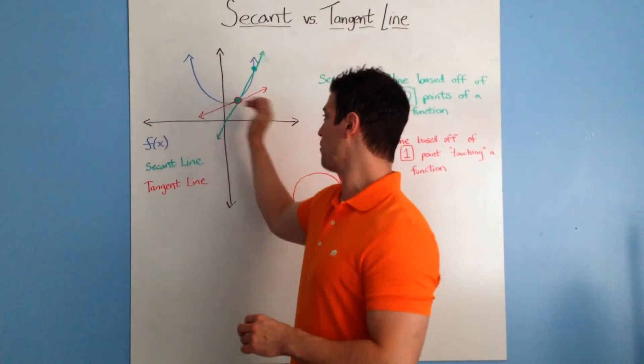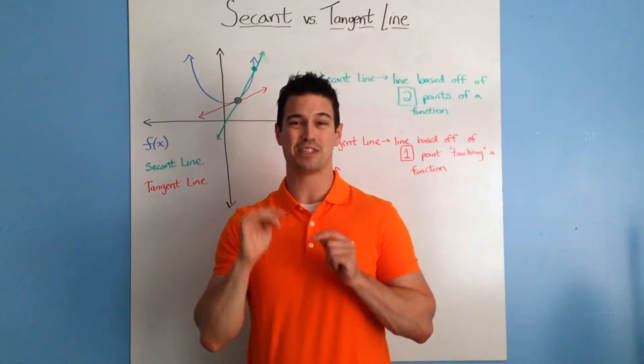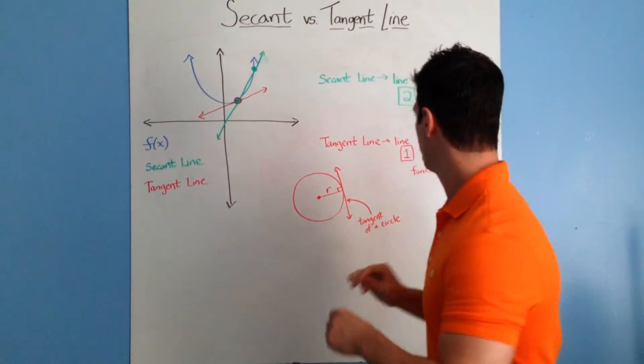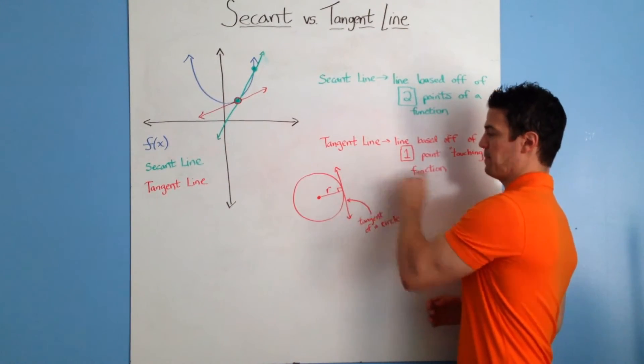Again, it could if the function goes out further or changes, but even so, the tangent line is just based off that one point. That's really important to understand: the secant line is based off two points, the tangent line is based off one point.